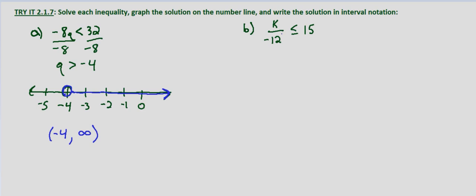With part b we're given k over negative 12 is less than or equal to 15. So again we multiply both sides by negative 12. The 12s, negative 12s on this side cancel. We're left with k. Now we multiplied both sides by a negative value, so we have to change the direction of the inequality symbol to be k is greater than or equal to 15 times negative 12, which is negative 160.